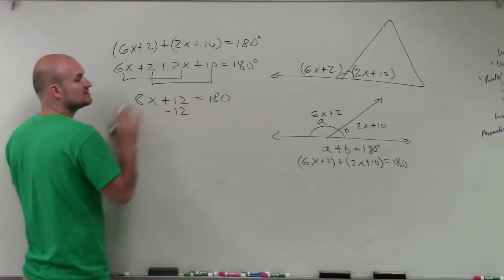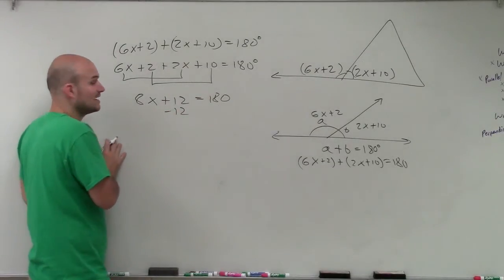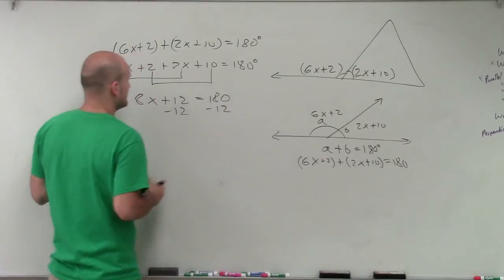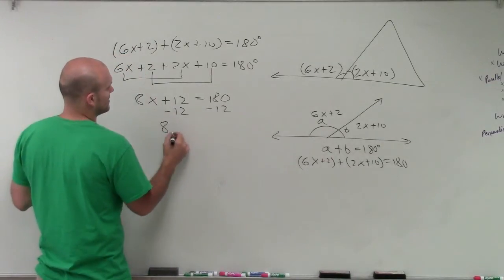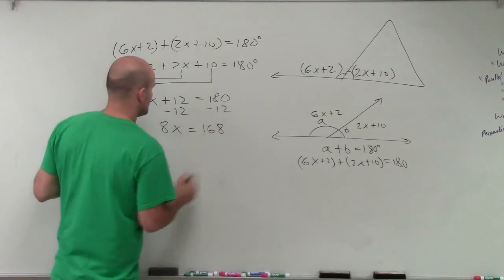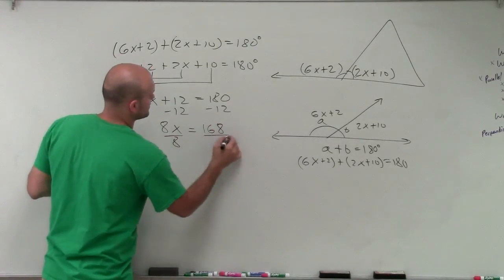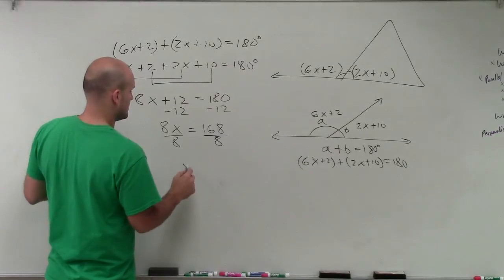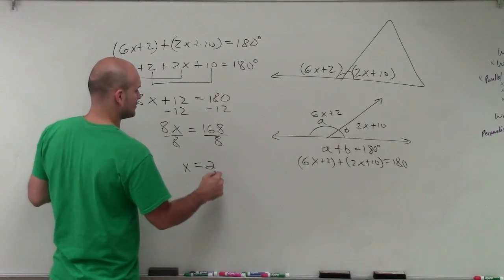Now I just have a two-step equation that I can solve for. So I subtract 12 on both sides. So I have 8x equals 168. Then divide by 8, divide by 8. And x equals 21.